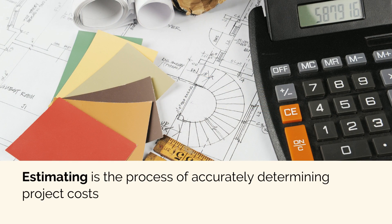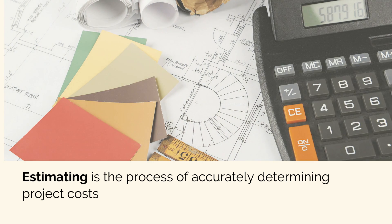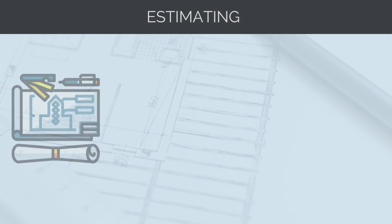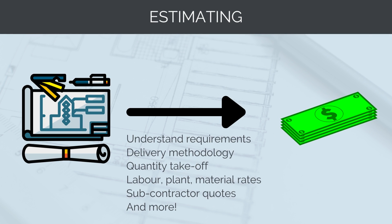Estimating is the process of accurately determining project costs. It's basically about working out how much money a project is going to cost to deliver. Through estimating, what we're basically doing is translating a project scope and design into a cost to deliver.